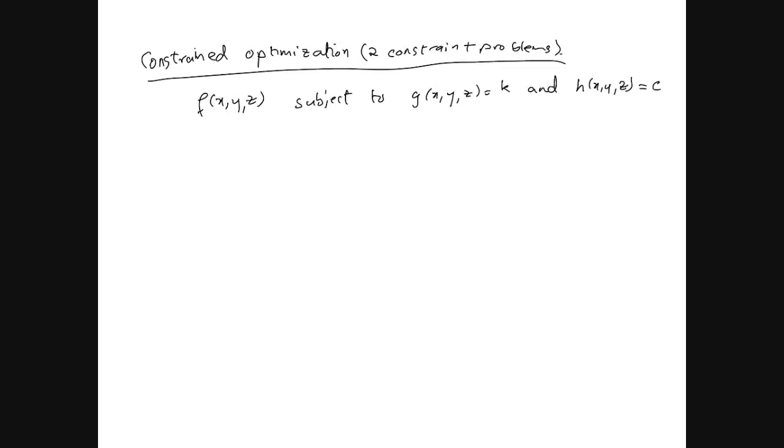This video is about constraint optimization, actually looking at two constraint problems. We're still looking at Lagrange multipliers, but in this case, in the previous video you saw only one constraint. Now we have two constraints.